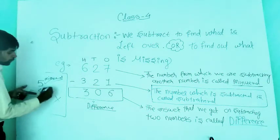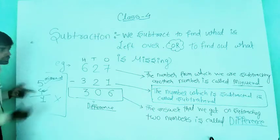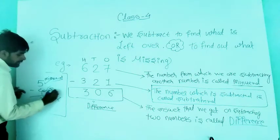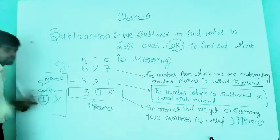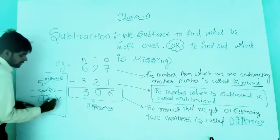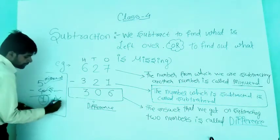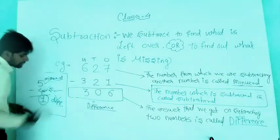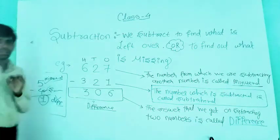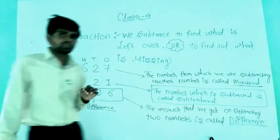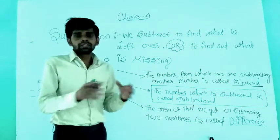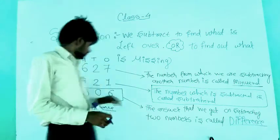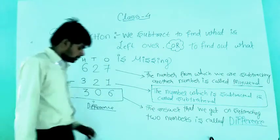5 is your minuend, 4 is your subtrahend, and 1 is the difference. Please note down in your notebook. This question is available on page number 32 — you can also write from your book or take a screenshot and note down.